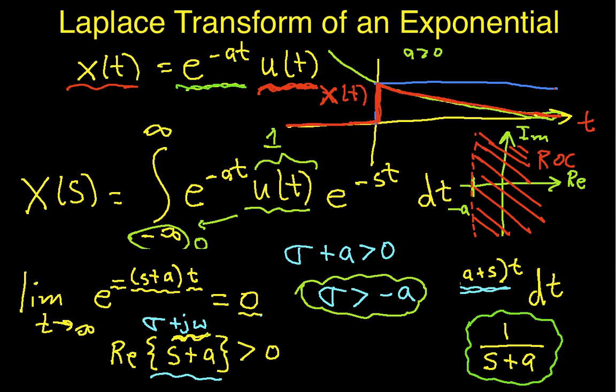So, basically, this is the result for the Laplace transform of an exponential. I get 1 over (s plus a) is the transform. The region of convergence is everything to the right of negative a. Now, again, for this particular signal x, the bilateral Laplace transform is the same as the unilateral Laplace transform.